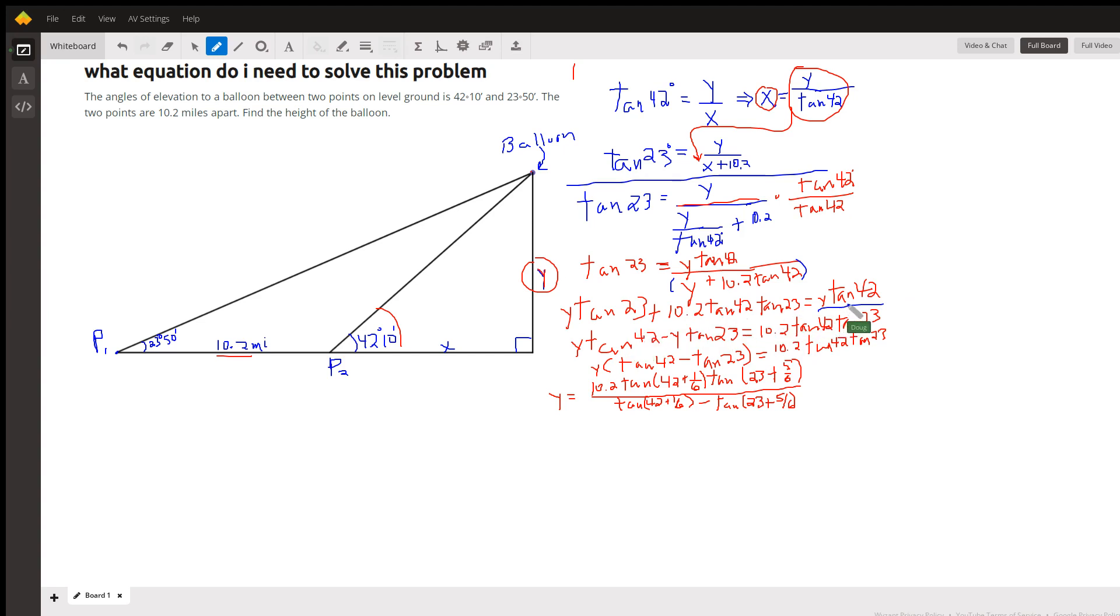Get the terms containing the letter Y on one side and equal side. So, I picture subtracting Y tangent of 23 from both sides, but then using the symmetric property for equality, I wrote it this way.